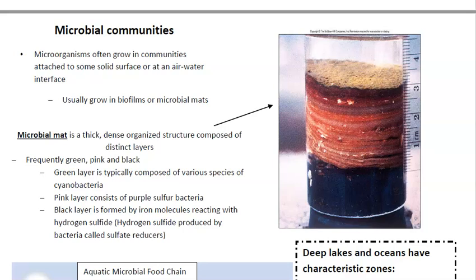Microbes often grow in communities attached to a solid surface or at an air-water interface, usually in biofilms or microbial mats. A microbial mat is a thick, dense, organized structure composed of distinctive layers — frequently green, pink, and black. The green layer is typically cyanobacteria, which are producers using sunlight. The pink layer consists of purple sulfur bacteria, which are heterotrophs. The black layer is formed by iron molecules reacting with hydrogen sulfide produced by sulfate-reducing bacteria. Bacteria growing on teeth is an example of a biofilm.